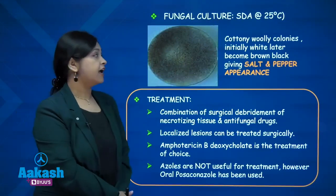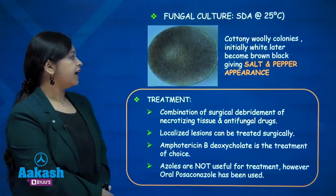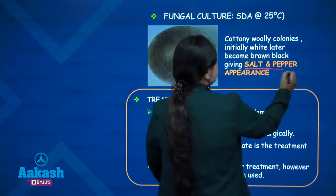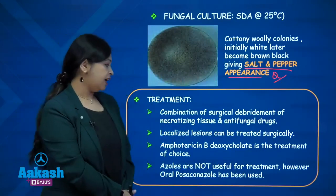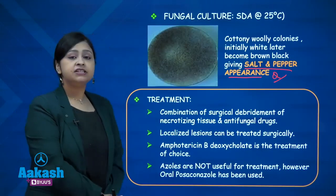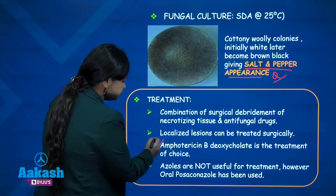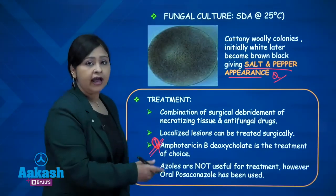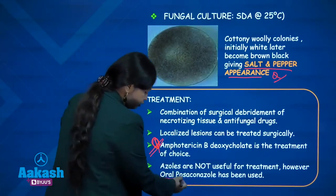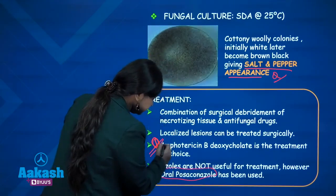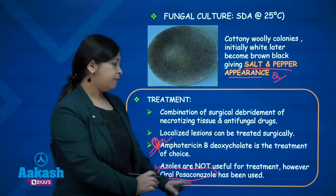When you culture zygomycota fungi, they appear as cottony woolly colonies, initially white but later becoming black — this is known as salt and pepper appearance. Coming to treatment: a combination of surgical debridement of necrotizing tissue and antifungal drugs is used. Amphotericin B deoxycholate is the treatment of choice. Azoles are not useful; however, oral posaconazole has been used. The two drugs are amphotericin B and oral posaconazole, apart from surgery.